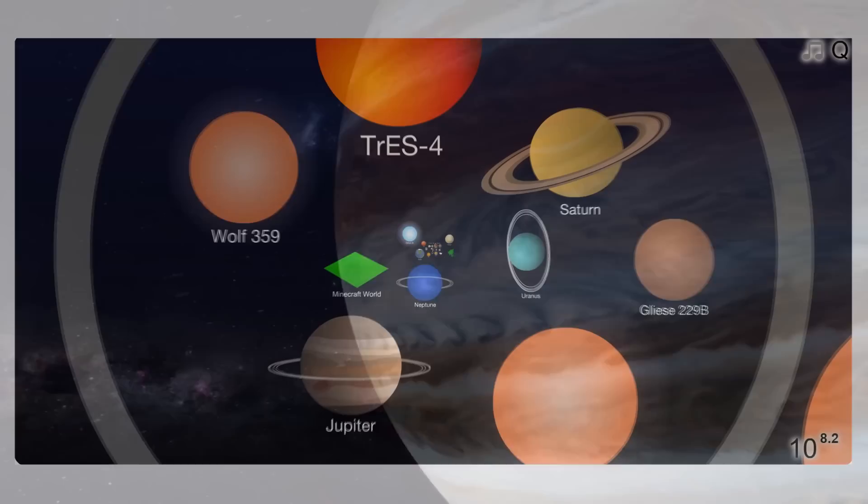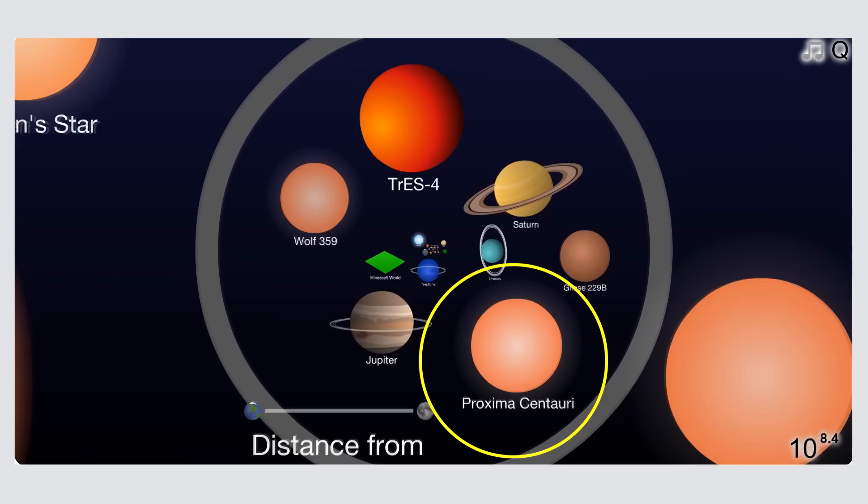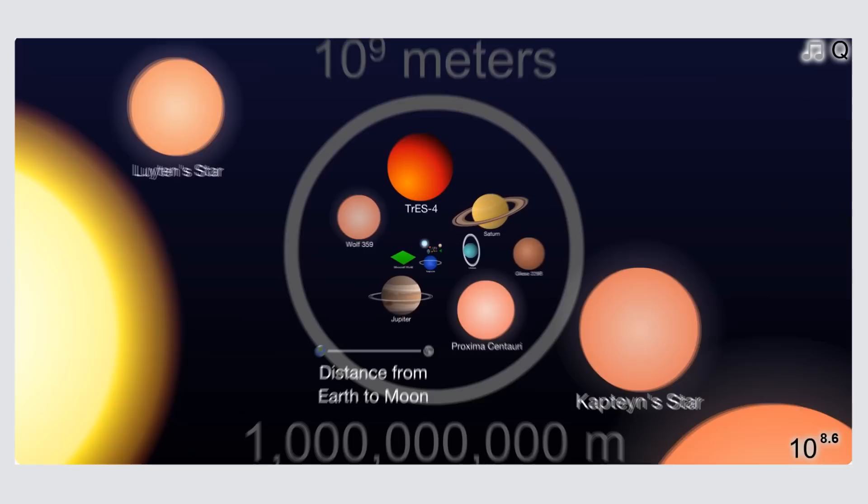Jupiter is actually only slightly smaller than our nearest star neighbor, Proxima Centauri, which is only about 215,000 kilometers in diameter. Much smaller than our sun, which is about 1.4 million kilometers, or 1.4 billion meters.